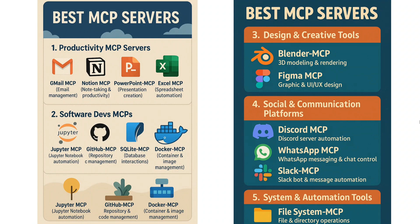Slack MCP is very similar to Discord — it can also help you manage your Slack channel: drop messages, read messages, do reactions, and more. The last category is system and automation tools. The File System MCP is the most important one, which can help you clean up your local system, create new files, read files, and more. One tool I missed in this entire infographic is Playwright MCP.